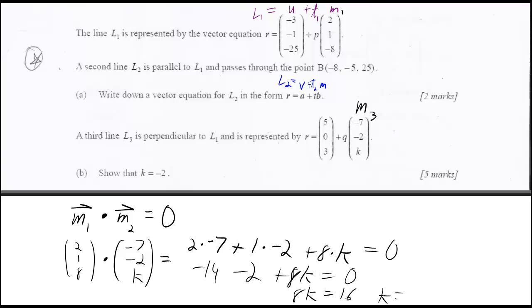So k would have to equal... whoops, messed up here somewhere. It should have been negative 8. There we go. So that would have been plus negative 8k. So that's negative 8k is equal to 16. So k is equal to negative 2. And we've shown it.